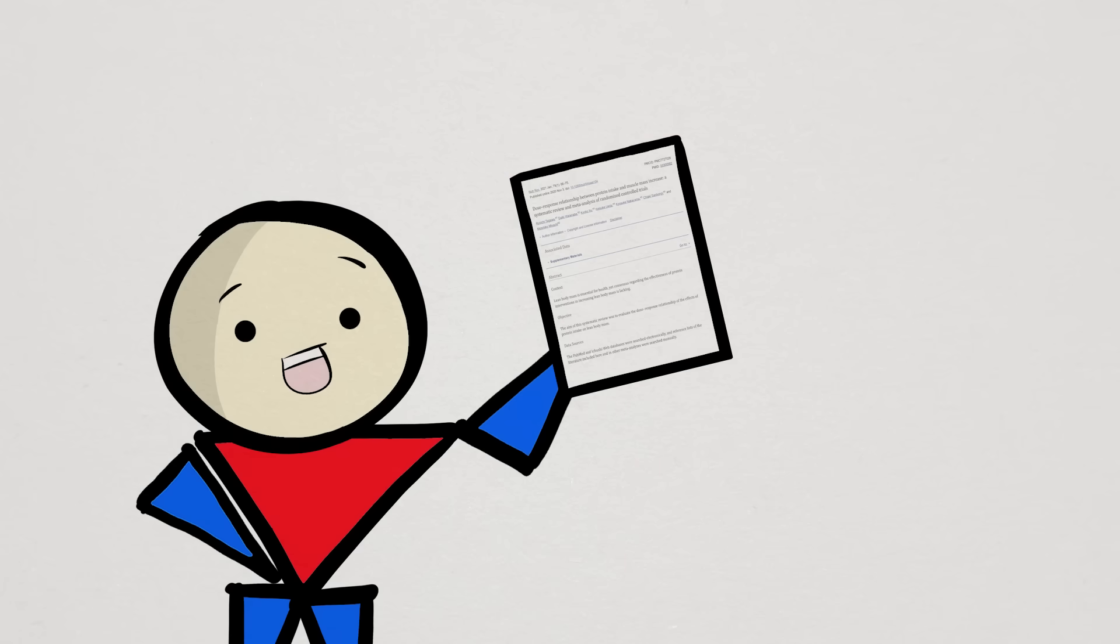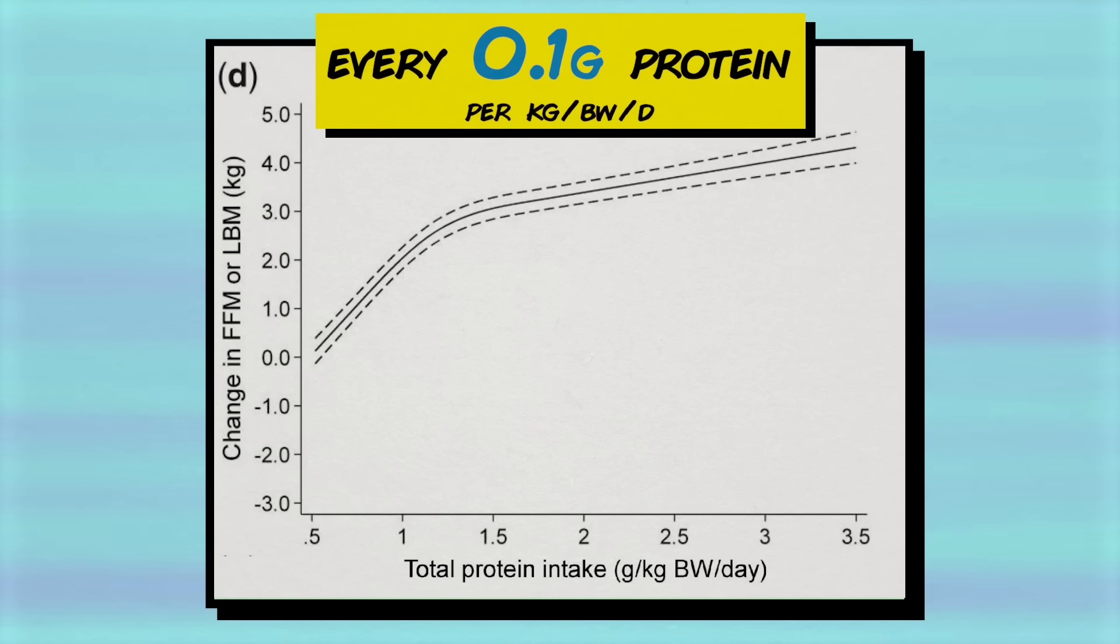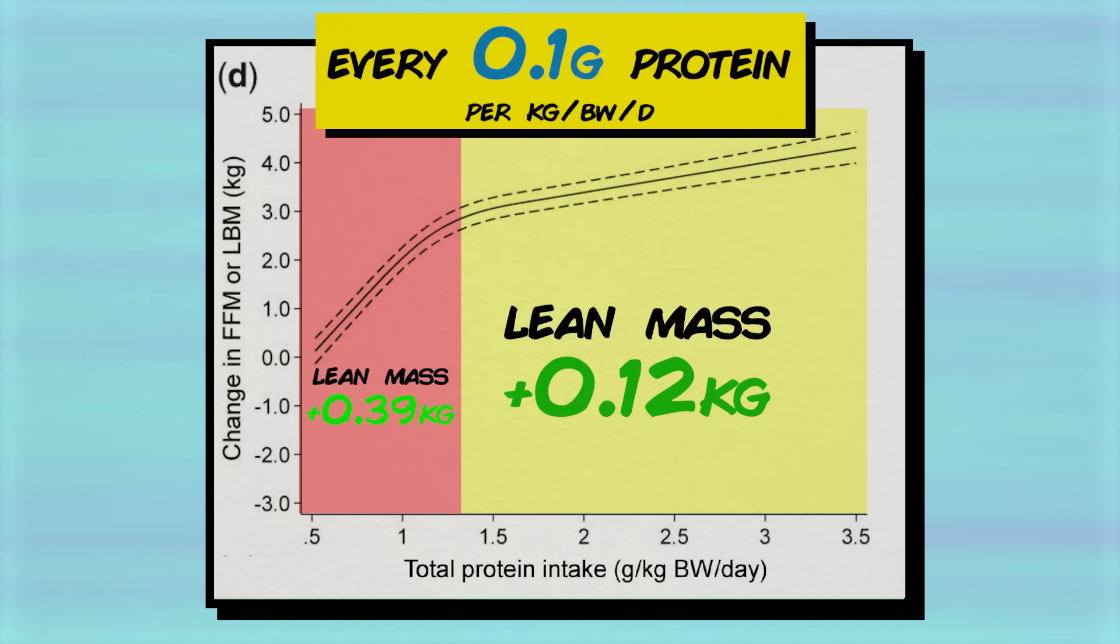In their findings, based on an average intervention period of 20 weeks, they observed that for every 0.1 grams of protein per kilogram added to your diet, lean mass gains go up by 0.39 kilograms until you reach 1.3 grams of protein per kilogram, where then it goes up by only 0.12 kilograms.